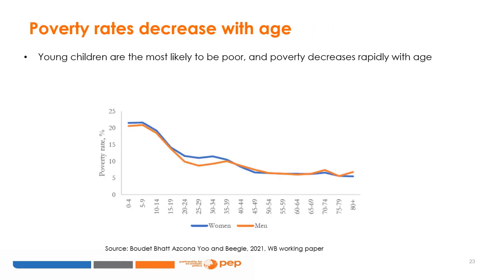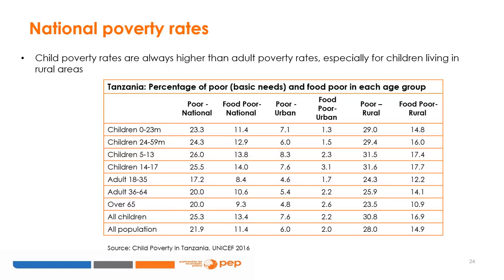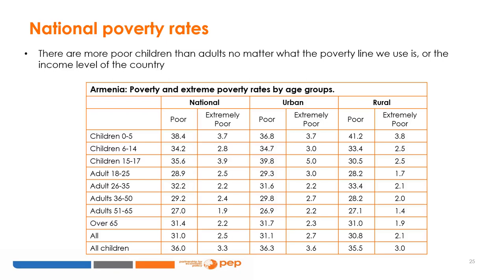Poverty rates tend to decrease with age, with young children having the highest poverty rates, becoming lower for the working age population until old age. Here we see an example of poverty calculated with the National Poverty Line of Tanzania using both the basic needs poverty line and the basic calories poverty line. With any definition, and both in rural and urban areas, children have higher poverty rates than adults. The same is true if we look at the poverty rates of Armenia, a middle low-income country in a completely different context — still, children have higher poverty rates than adults.